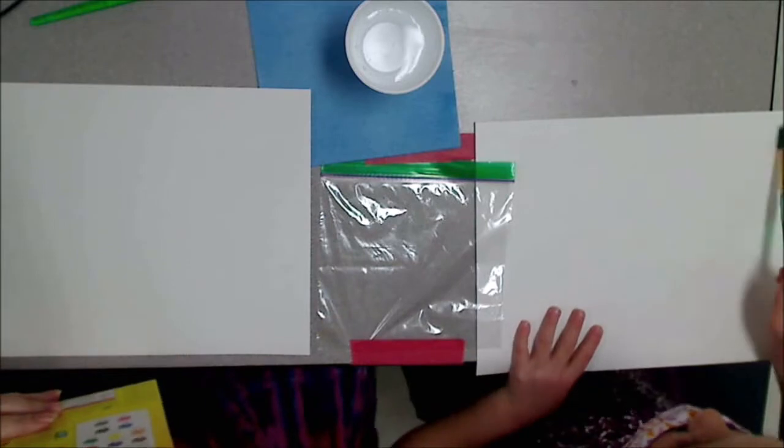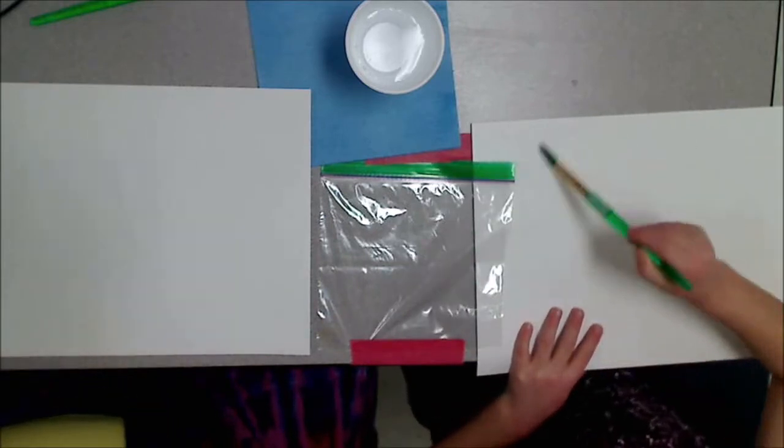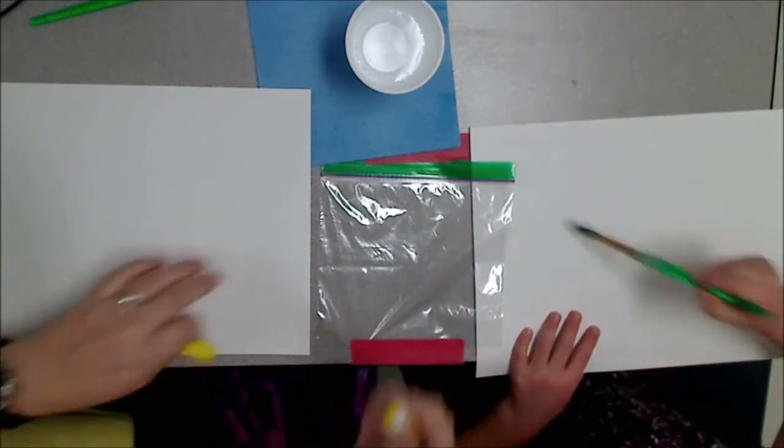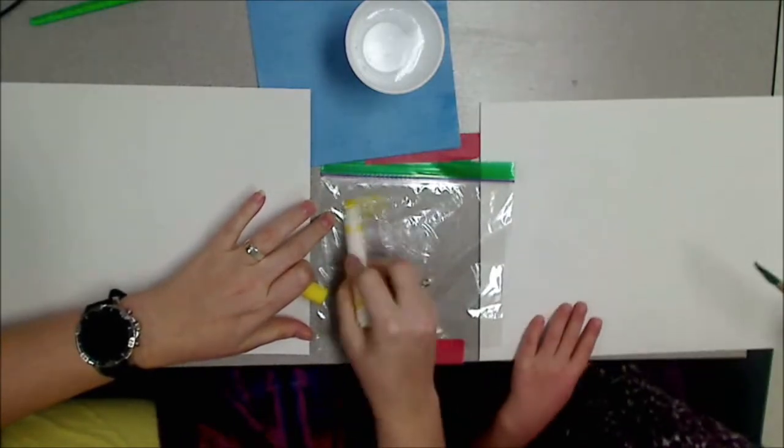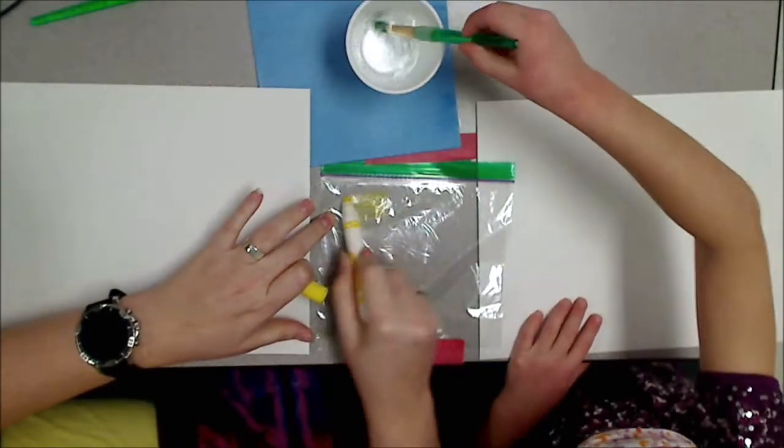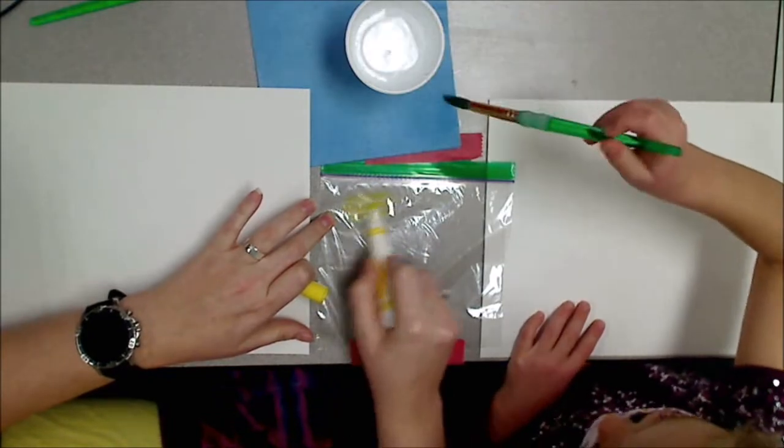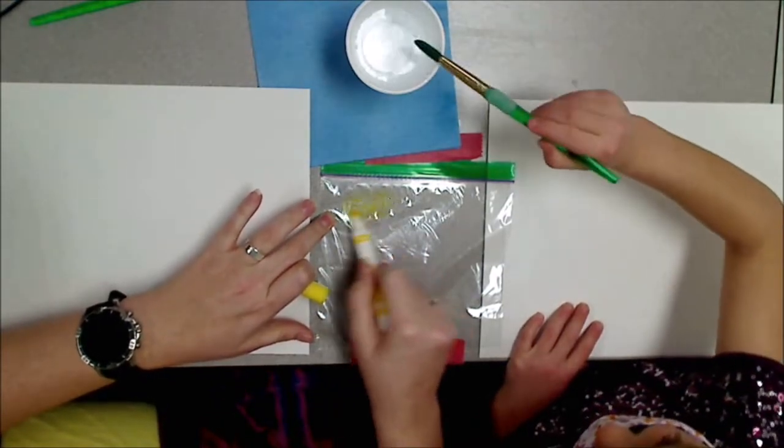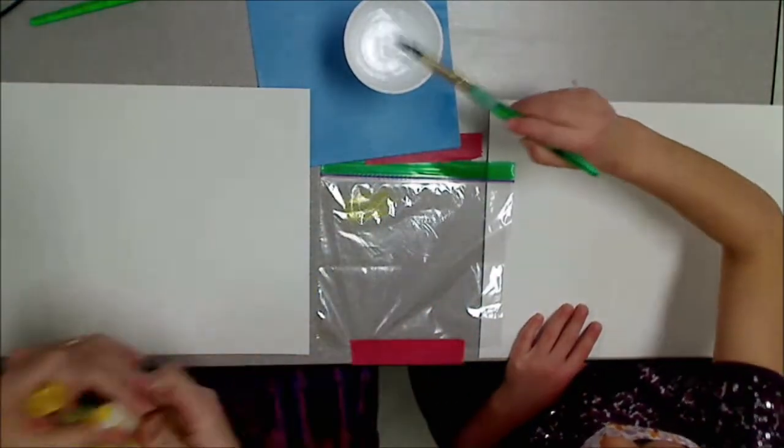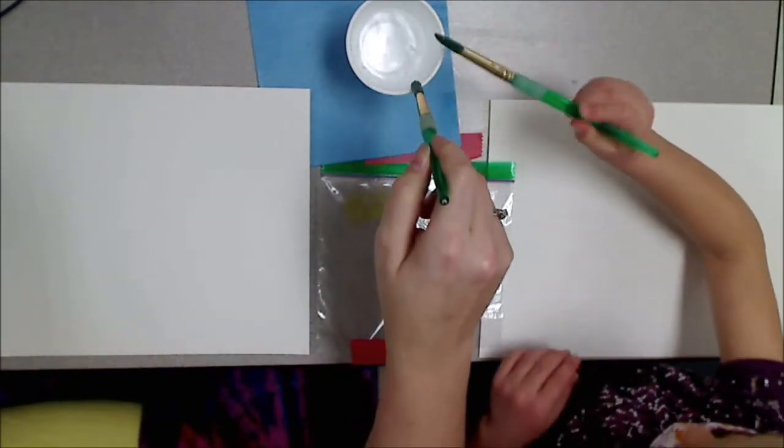All right, we are going to start off with the sun first. What color do we need for the sun? Yellow. Yellow. Now look, we are going to color it here. Dip your brush in the water. Squeeze a little bit of the water off. Are we going to tap that off? No, don't tap. Dip, squeeze.